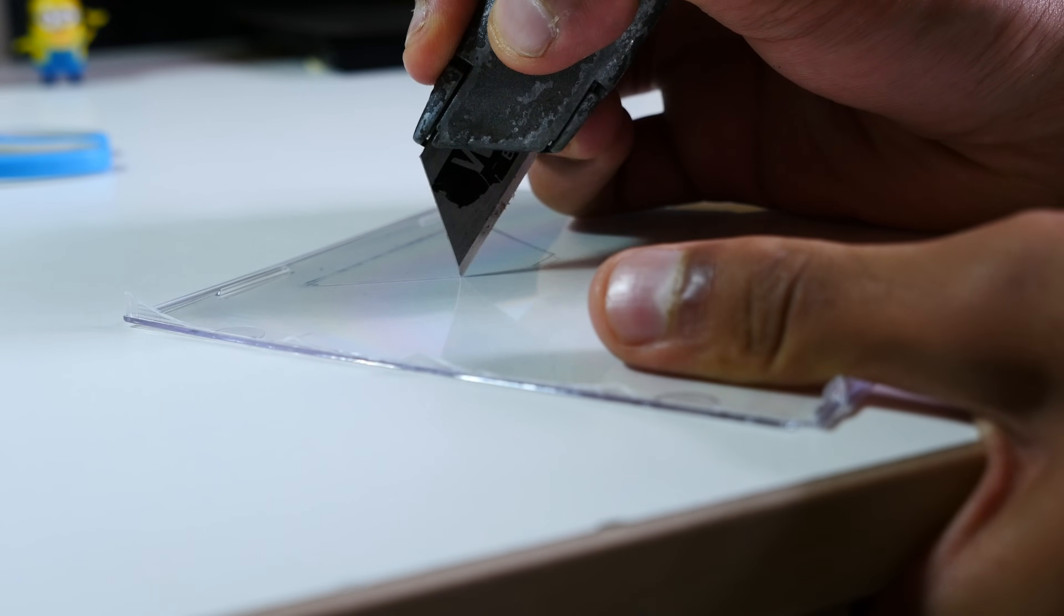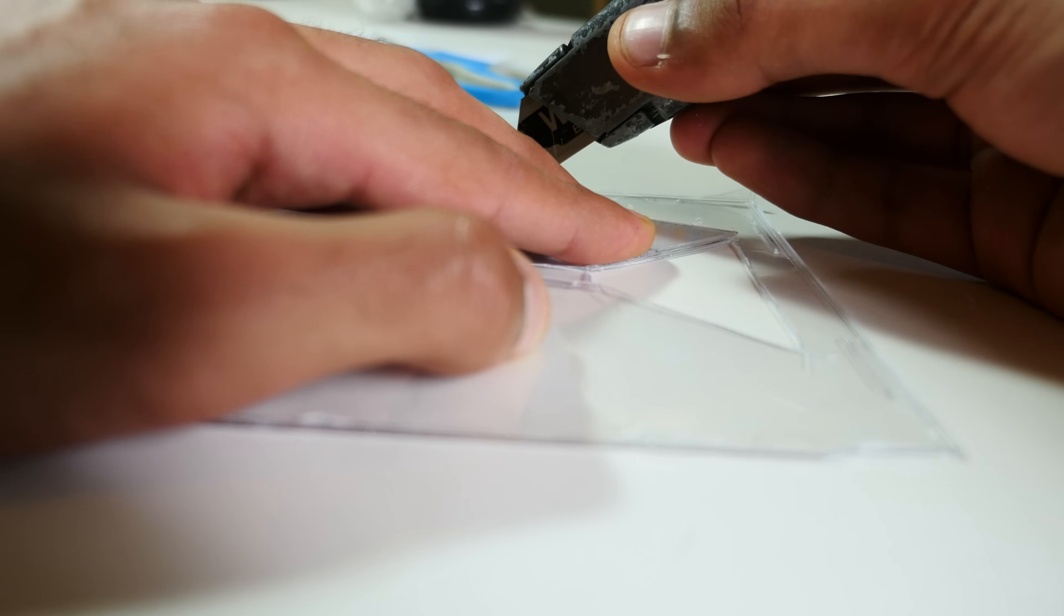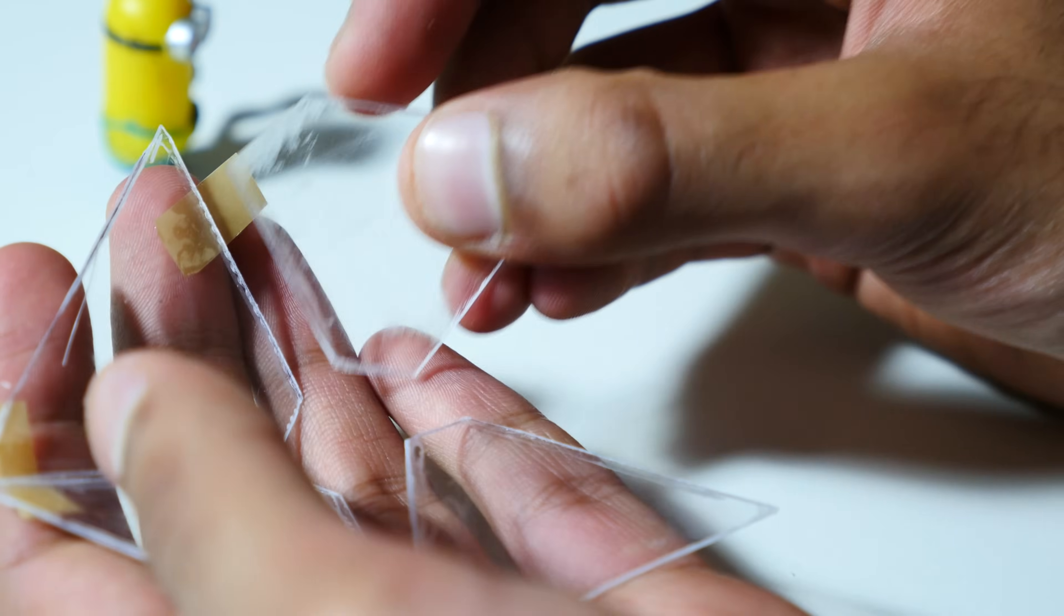So then, get a scalpel, a knife or a glass cutter, and again, very carefully trace around the template. Once you've cut your first one out, you can then use that to get the others.